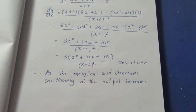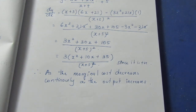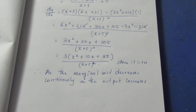Because the denominator increases as x increases — as the output increases, the x value increases, making the overall value decrease continuously. Therefore, as output increases, the marginal cost keeps decreasing. Hence proved.